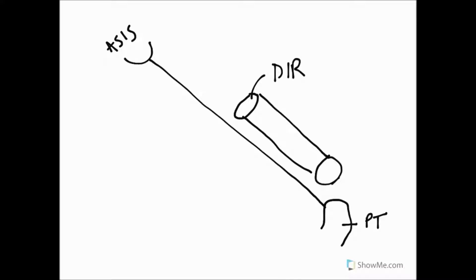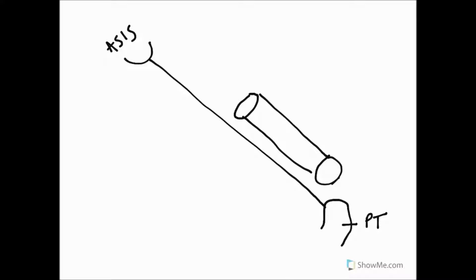And this is our superficial inguinal ring. I'll label that and then remove it to free up space. There are two types of hernia you've likely heard of: indirect inguinal hernias and direct inguinal hernias. We're going to draw some anatomical structures to help understand the difference between the two.